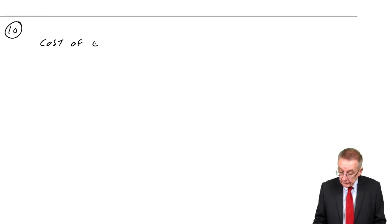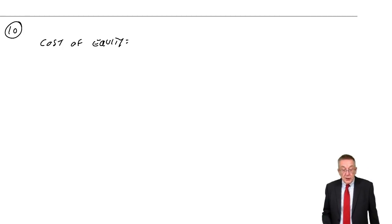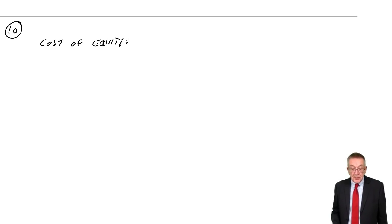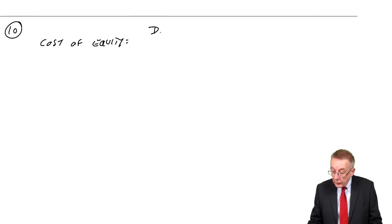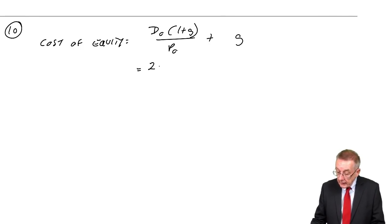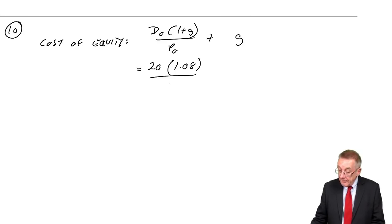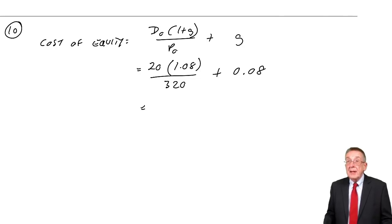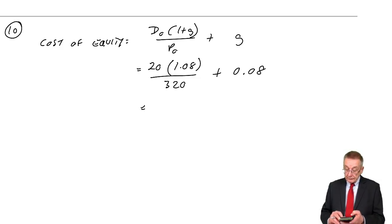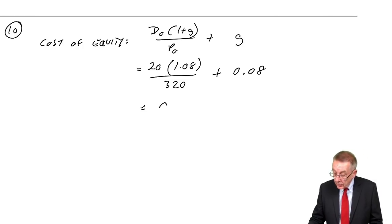Cost of equity. 10 million shares at $3.20 ex div. A dividend of 20 cents per share has just been paid. Dividends are growing at 8% per annum. So the normal formula: D0(1+G)/P0 + G. D0, current dividend, 20 cents, times 1 plus G, 1.08, over the market value, the ex div value 320, plus the rate of growth 0.08, which gives me 20 times 1.08 divided by 320 plus 0.08, which is 0.1475 or 14.75%.